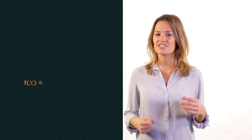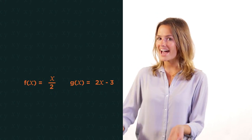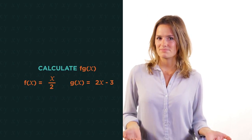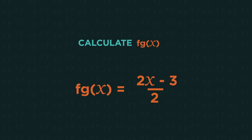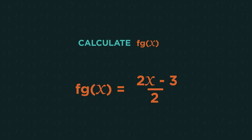We may not always be given a number. The question could just ask us to find f, g of x. So then we've got to do some algebraic substitution. So we just substitute 2x minus 3 into f of x, in place of any x's.